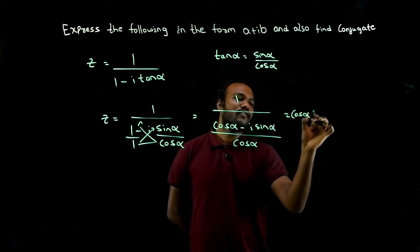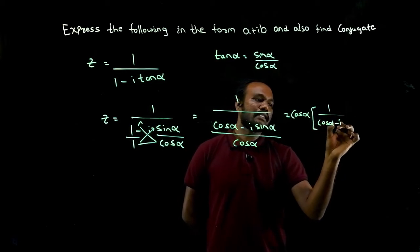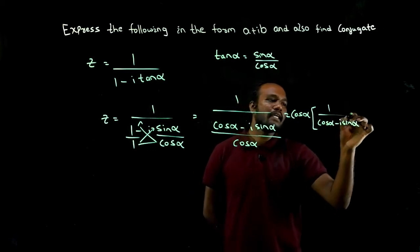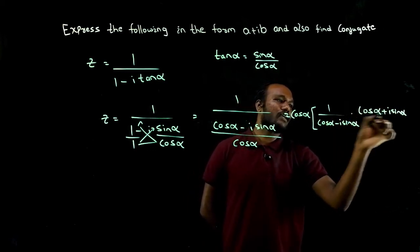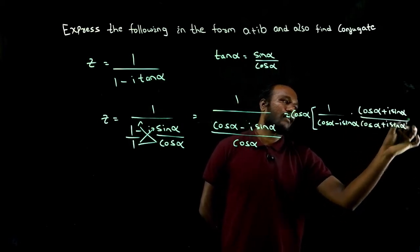So I'll have cos alpha times 1 by cos alpha minus I sine alpha. Okay, so just multiply this with cos alpha plus I sine alpha divided by cos alpha plus I sine alpha.